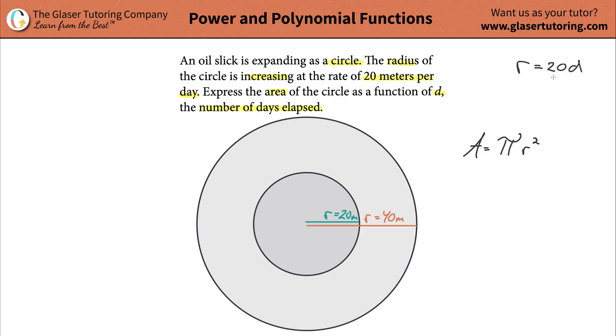So after one day, if d were 1, what would the radius be? It would be 20. If d were 2, then this whole thing works out to be 40, and the radius would have been 40, and that would have been the radius after two days, and that's exactly what we came up with.